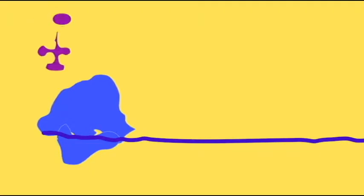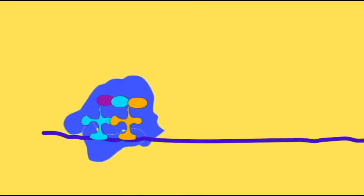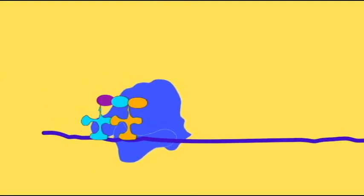Elongation of the chain of amino acids occurs when peptide bonds unite amino acids brought to the ribosome by the tRNAs. The amino acid from the p-site is transferred to the tRNA in the a-site, and the tRNA from the p-site can then float away.